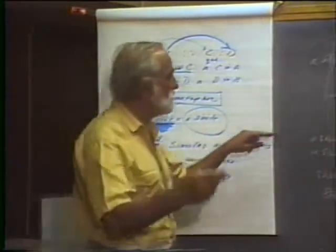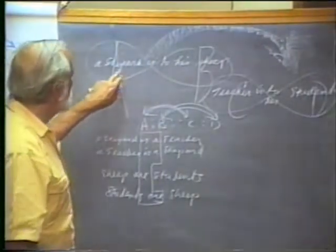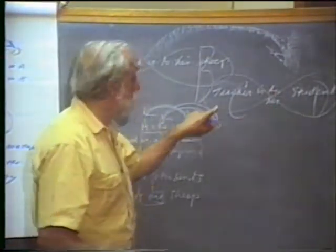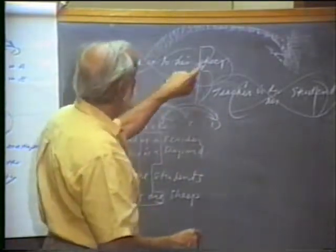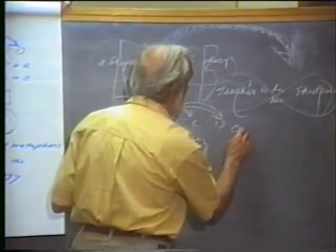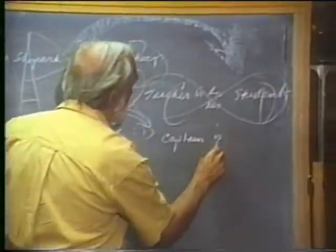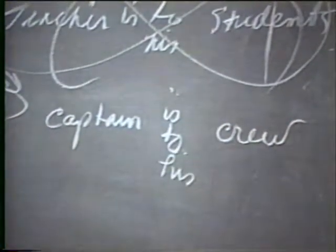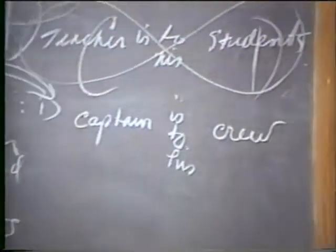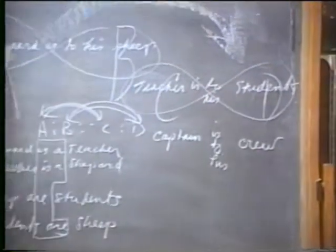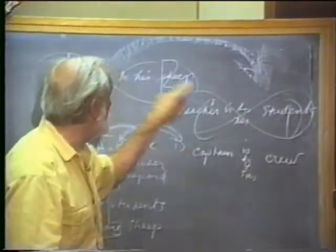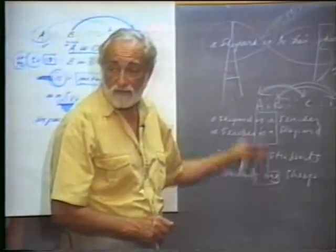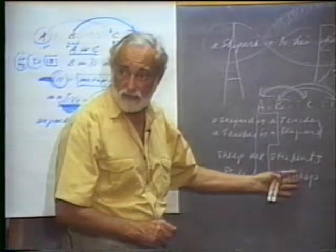This is an analogy of four terms: a shepherd is to his sheep as a teacher is to his students. Or we can say a shepherd is to his sheep as a captain is to his crew. And we can do the same thing: a shepherd is like a captain, a captain is like a shepherd, sheep are like the crew members, and we can generate another set of four metaphors and four similes.